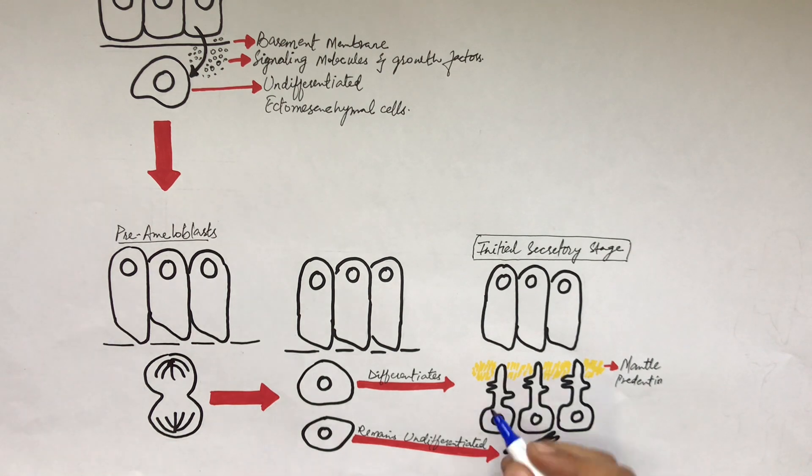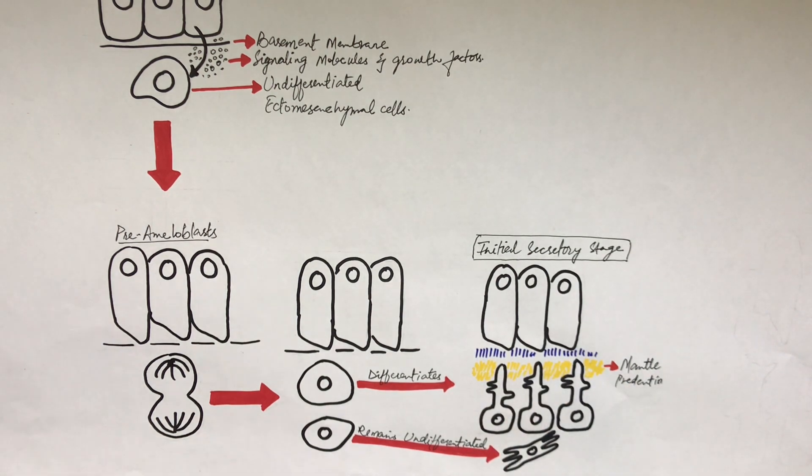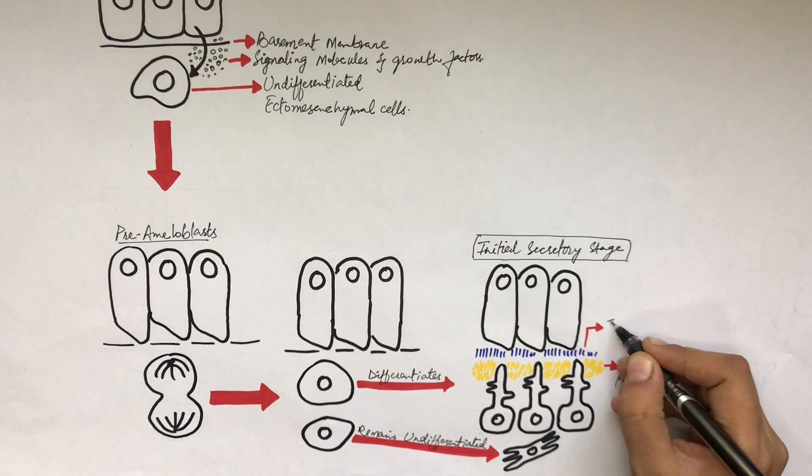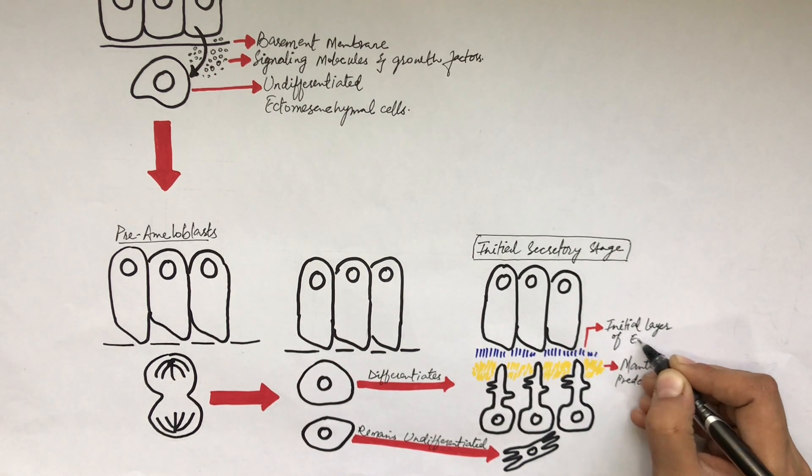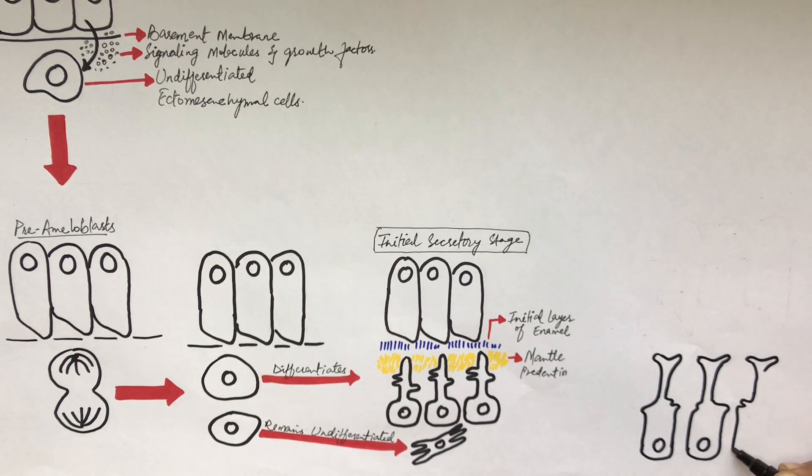As soon as the pre-dentine mineralizes, it becomes mature dentine. After this first layer of mantle dentine is formed, the ameloblasts will lay down the initial layer of enamel matrix.